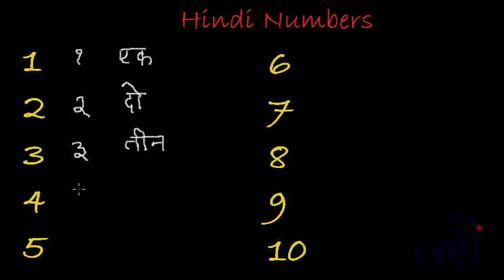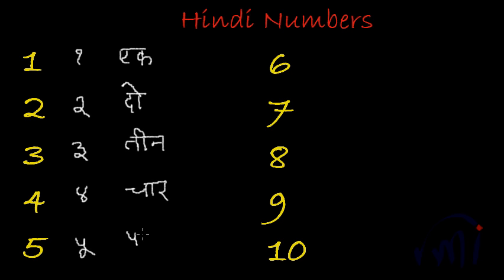This is 4 and it is called chaar. This is 5 and it is called paanch — written as pa, pa with aa ki matra, chandra bindu, and cha — paanch.